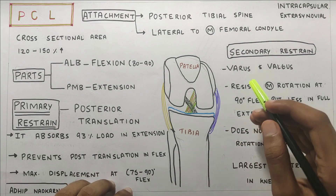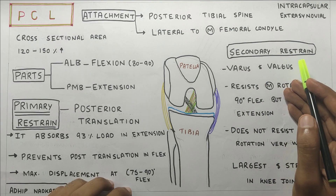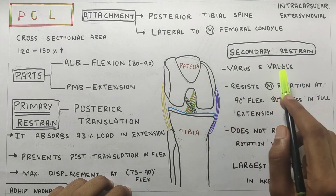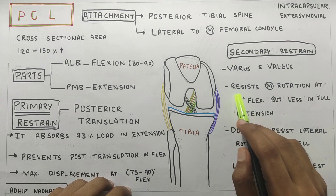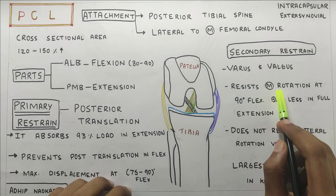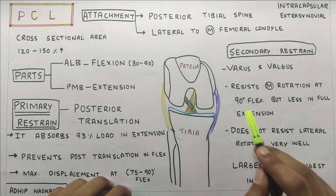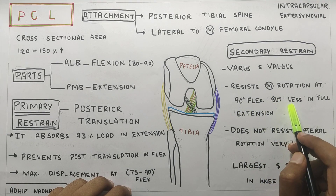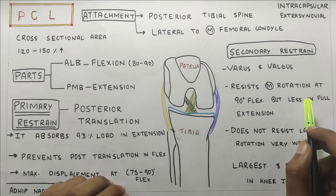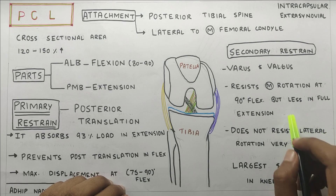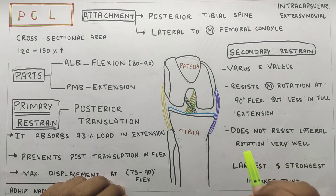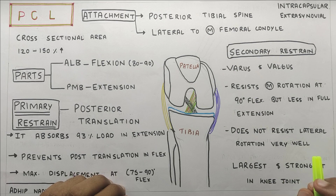Going to the secondary restraint, PCL also prevents varus and valgus forces and resists medial rotation at 90 degrees of knee flexion. It resists medial rotation less in extension and does not resist any lateral rotation forces.